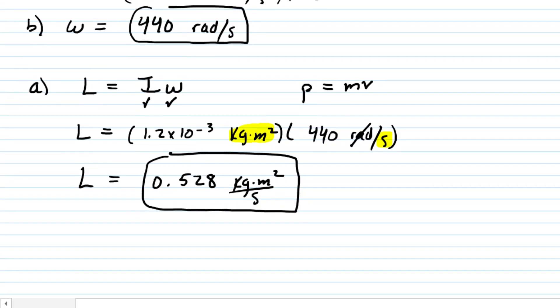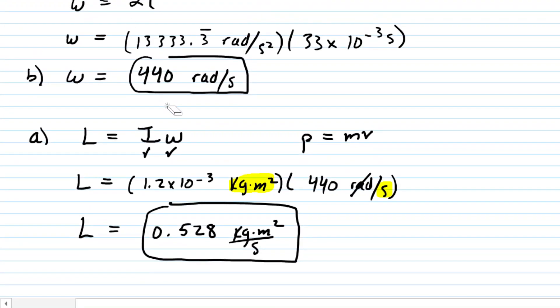One more point regarding part B. If your homework system needs you to calculate the angular velocity in revolutions per minute, you can make a simple conversion. We rewrite the answer as 440 radians per one second. To get this into revolutions per minute, we know that one minute is equivalent to 60 seconds. When we multiply by that conversion factor, the seconds cancel out. We also have to convert the radians into revolutions.